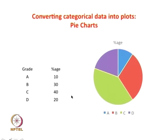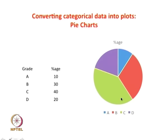Let's say the mid-semester exam is over and you have graded the students and want to find out statistics on who got what grades. There are 10% with grade A, 30% with grade B, 40% with grade C, and 20% with grade D. You can represent this in what is popularly known as a pie chart. You can clearly see that 40% is C and it has the biggest section. The area of the pie chart is proportional to the relative frequency.